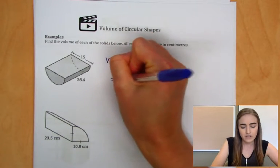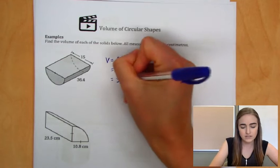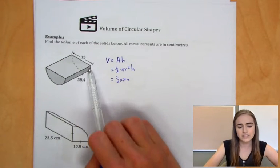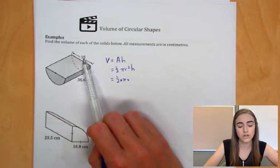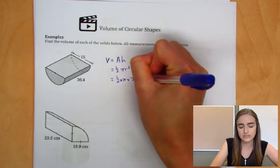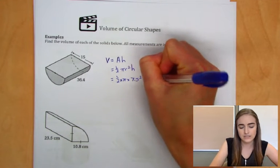So that means we're going to have a half times pi times the radius. Now the diameter of this circle is 15. We only want the radius, so we want half of that. So that would be 7.5 squared, and then times that 36.4.